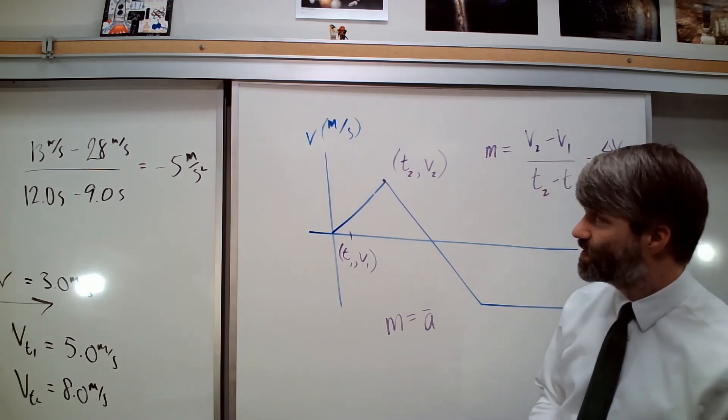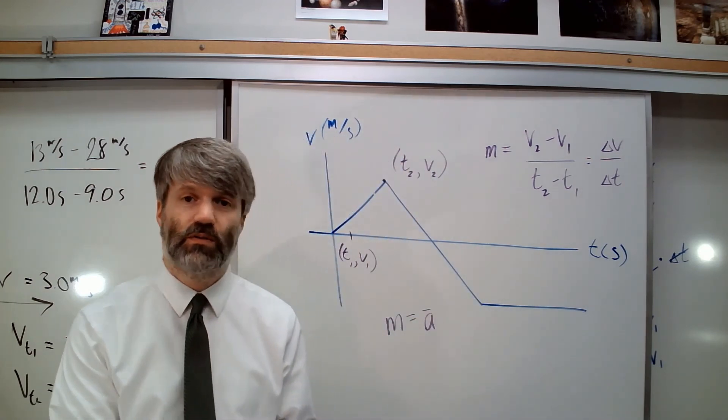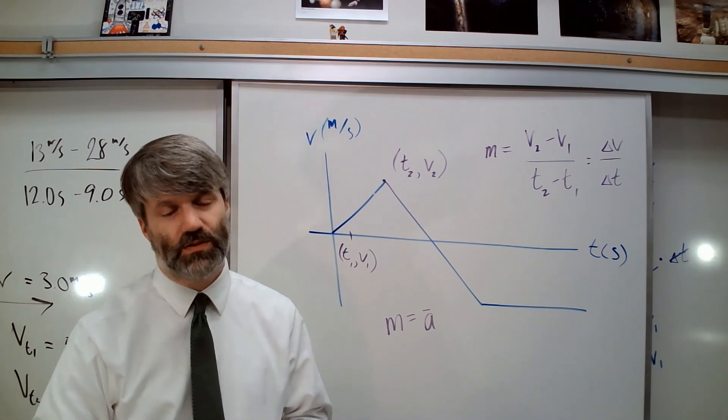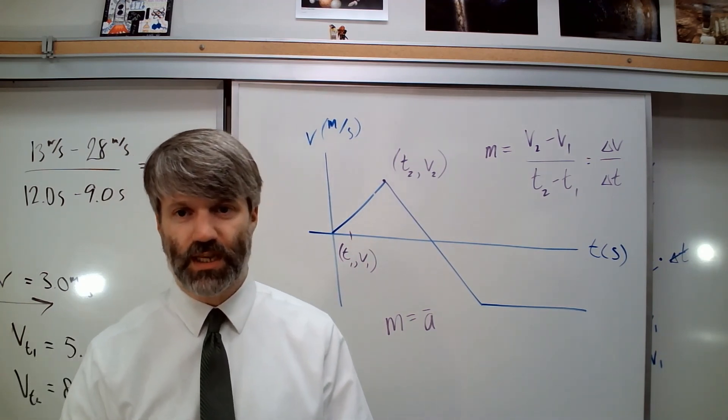So from a velocity versus time graph, we can find not only the velocity and not only the displacement of the object, but also the average acceleration of the object as well.